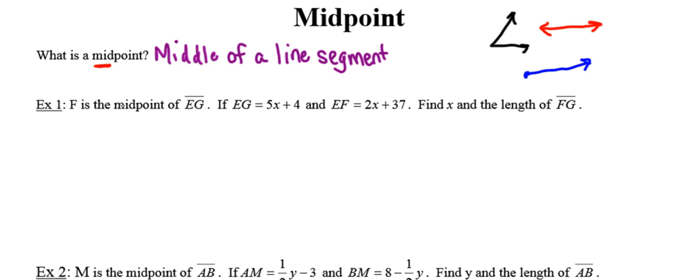Point F is the midpoint of line segment EG. I'm going to start by drawing line segment EG with endpoint E and endpoint G. F is the midpoint, so that means F goes right in the middle of line segment EG. If F is the midpoint, I know it's going to break my line segment into two equal parts. The two equal pieces are line segment EF and line segment FG. I'm going to mark them congruent in my diagram.